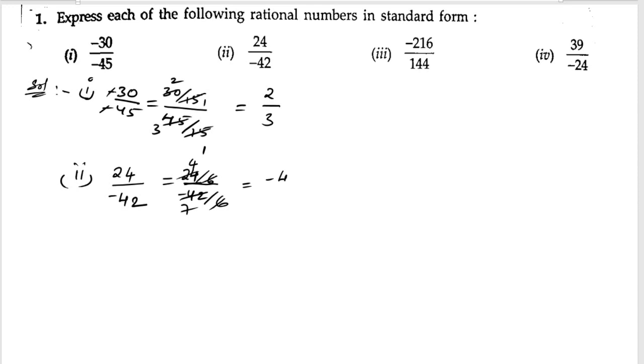Next, third bit. In the third bit we have minus 216 by 144. Here the HCF for 216 and 144 is 72. We can cancel this with the help of 72, so 216 by 72 and 144 by 72. 72 ones are 72, 72 threes are 216, 72 twos are 144. So we get minus 3 by 2.